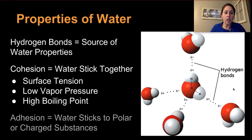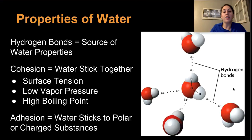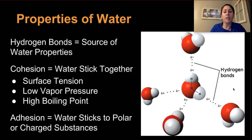Another important property is adhesion — think of adhesives, they stick to things. Adhesion is where water sticks to other substances that are either polar or charged. That's why we see the meniscus when looking in our graduated cylinders. Both cohesion and adhesion, combined through hydrogen bonding, give us some interesting things that happen in life.